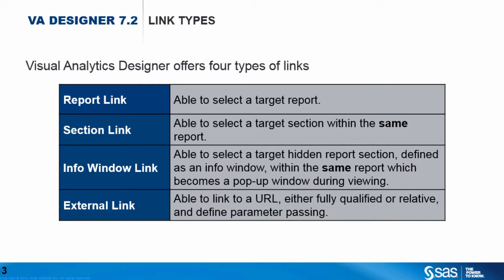Visual Analytics Designer offers four types of links. The first is a report link, which enables you to select a target report. The second is a section link, where you're able to select a target section within the same report. InfoWindows, which is what we'll focus on today, is where you're able to select a target hidden report section defined as an InfoWindow within the same report, which essentially becomes a pop-up during viewing. And the last one is an external link, where you're able to link to a URL, either fully qualified or relative, and you can even pass parameters.